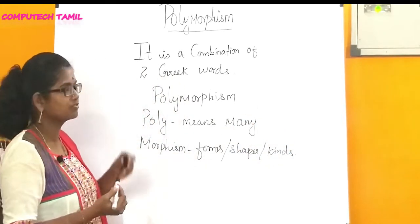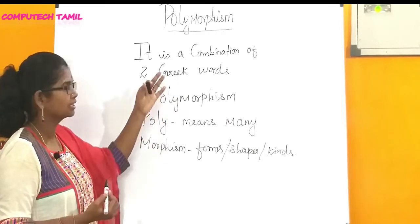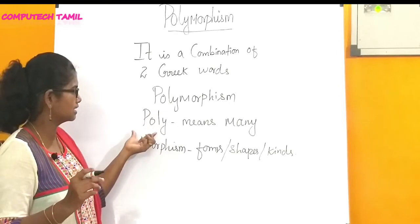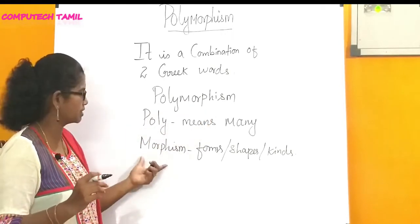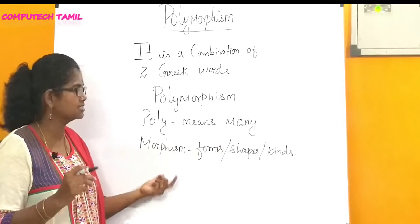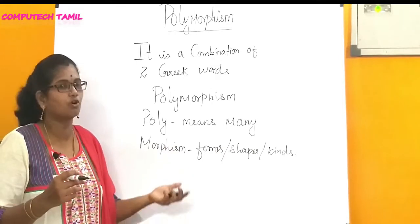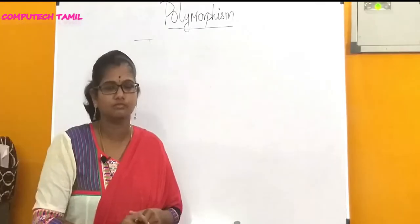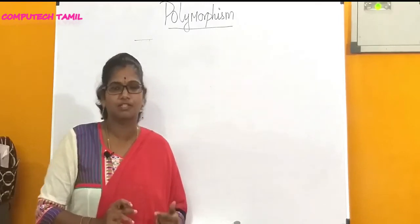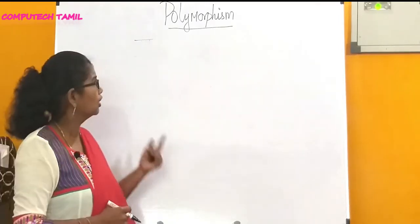So polymorphism is a combination of two Greek words. Poly and morphism are separate words. Poly means many, morphism means forms, shapes or kinds.